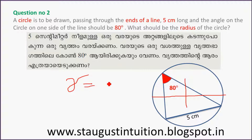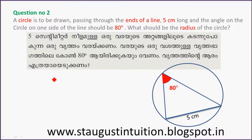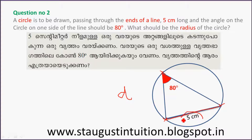R is equal to diameter divided by 2. Now, how to find the diameter? This is the diameter. The side is equal to diameter into sin of the angle.